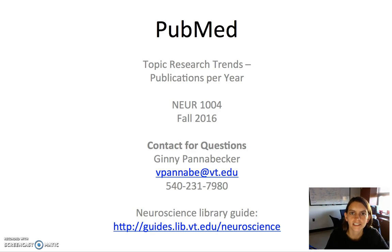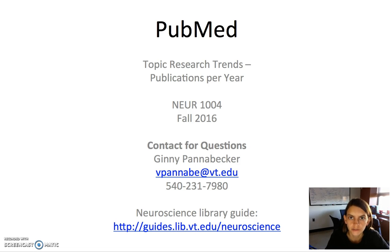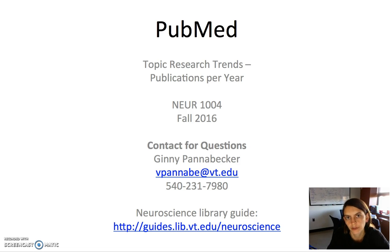Hi, this is Jenny Pannebecher with Virginia Tech University Libraries. This video will cover one way to accomplish the assignment for Neuroscience 1004, using PubMed to explore topic research trends by looking at the number of publications per year on a given topic.